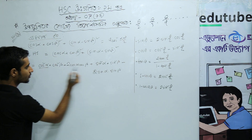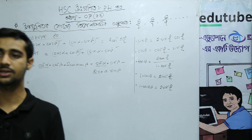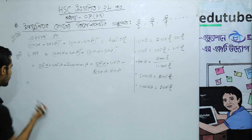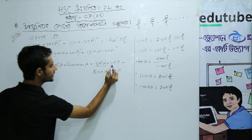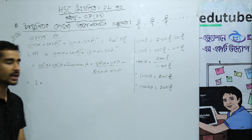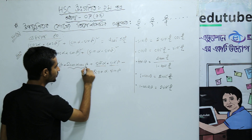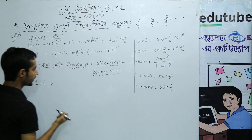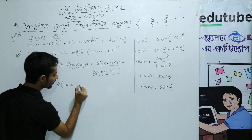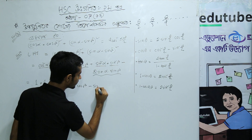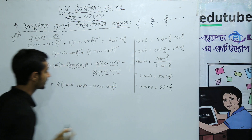So cos squared alpha plus sin squared alpha equals 1, and cos squared beta plus sin squared beta equals 1. So we get 1 plus 1, and taking out 2 as common: 2 cos alpha cos beta minus sin alpha sin beta.